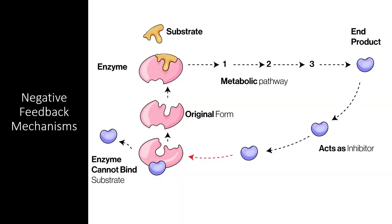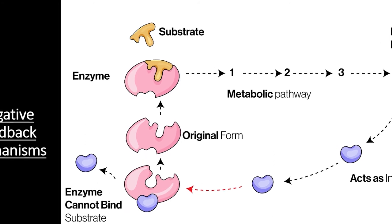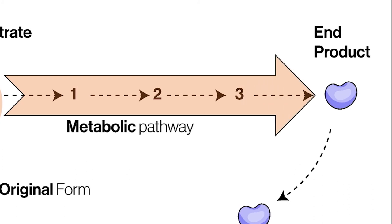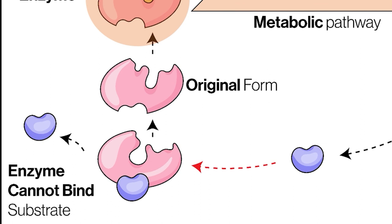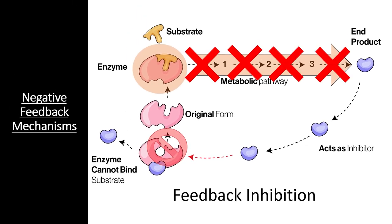Negative feedback mechanisms maintain homeostasis for a particular condition by regulating physiological processes. If a system is perturbed, negative feedback mechanisms return the system back to its target setpoint. A very common negative feedback mechanism is known as feedback inhibition — an enzyme catalyzes a reaction that starts a metabolic pathway, and the end product of this metabolic pathway acts as an inhibitor of the original enzyme, blocking it from catalyzing the original substrate and effectively stopping the entire metabolic pathway.